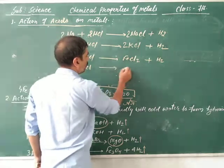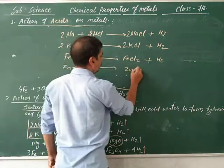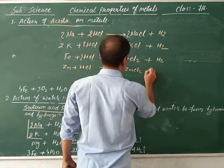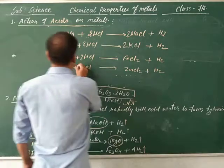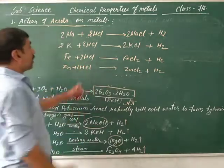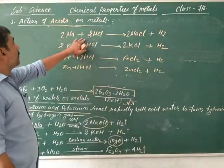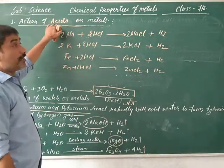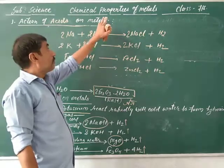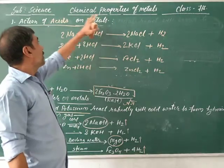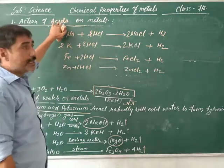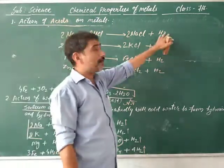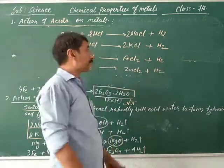Most of the metals react with acid to form its salt and release hydrogen gas. This is the general reaction between metals and acids.